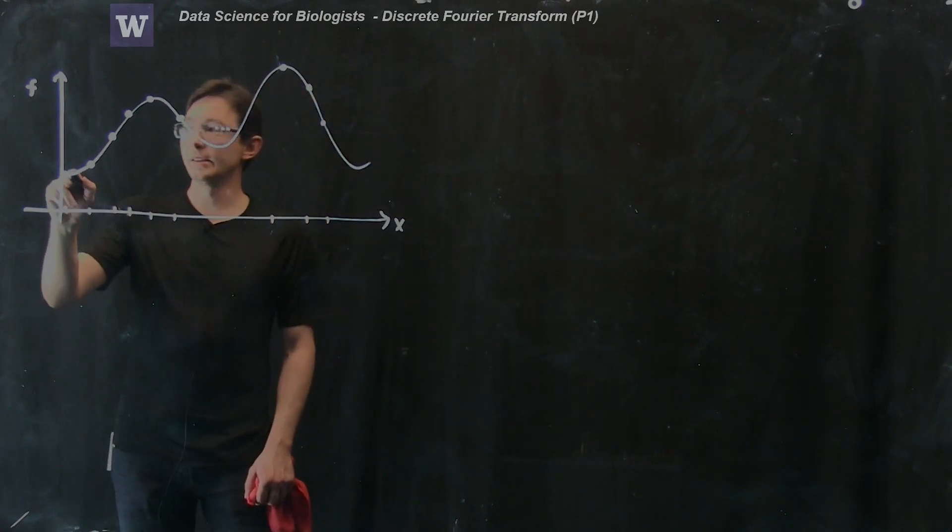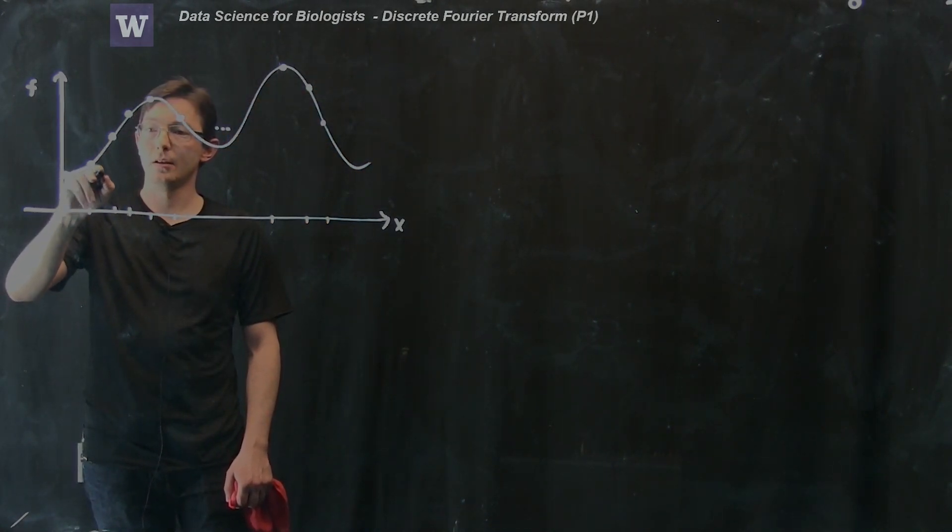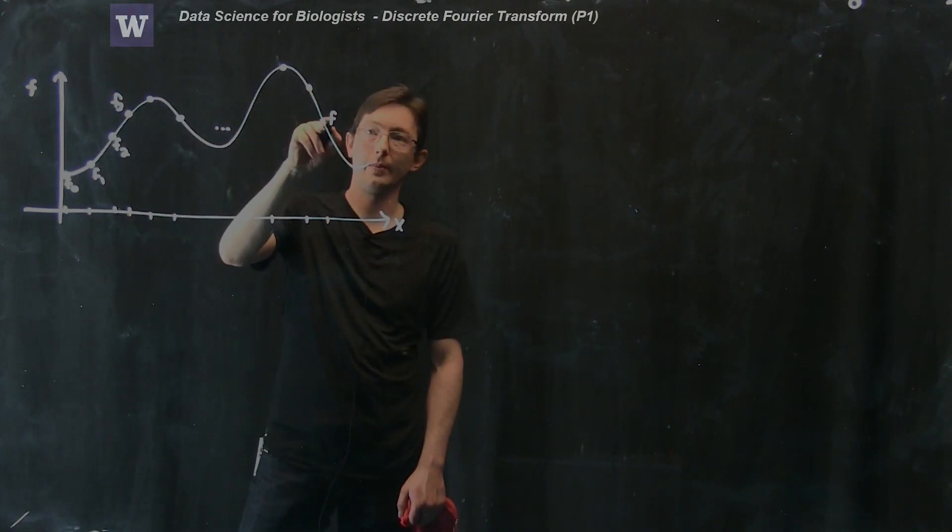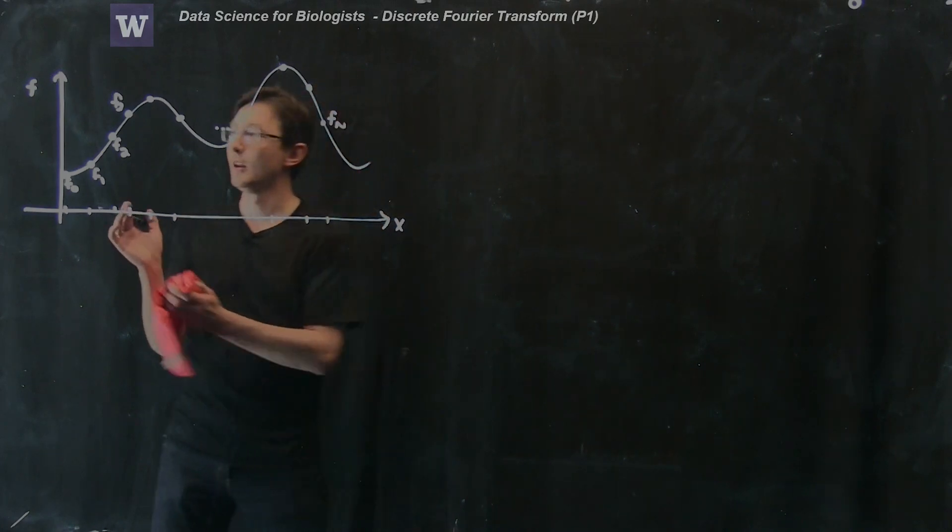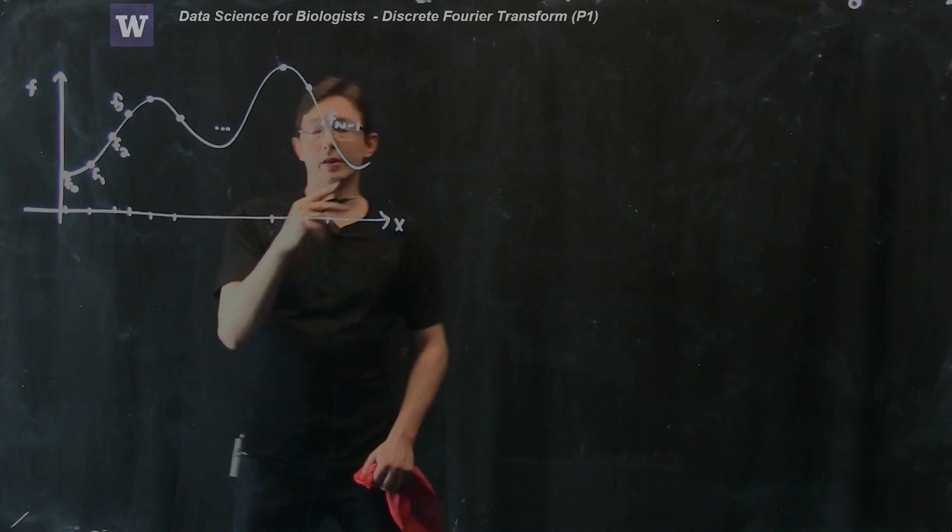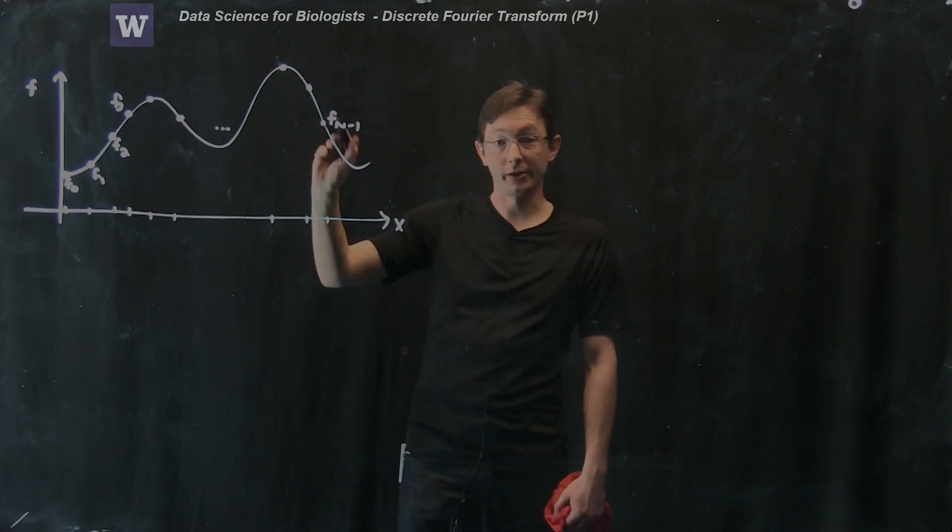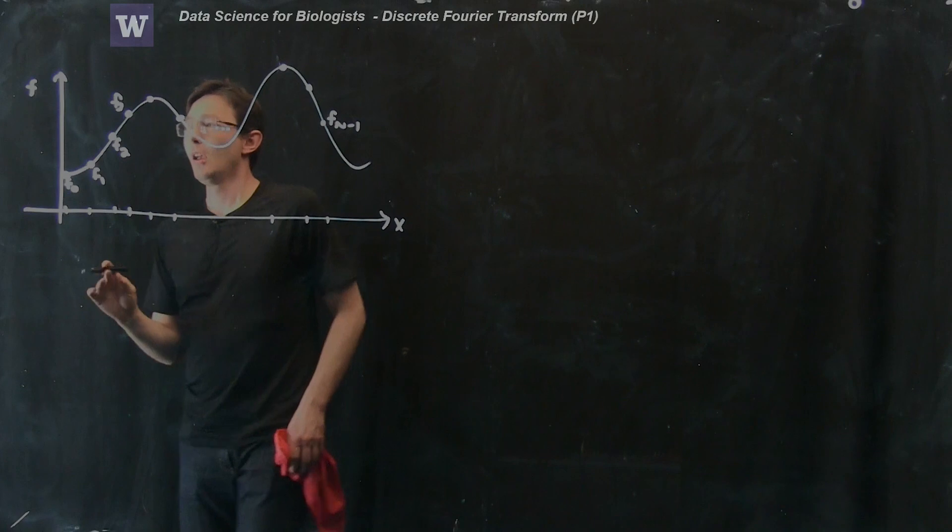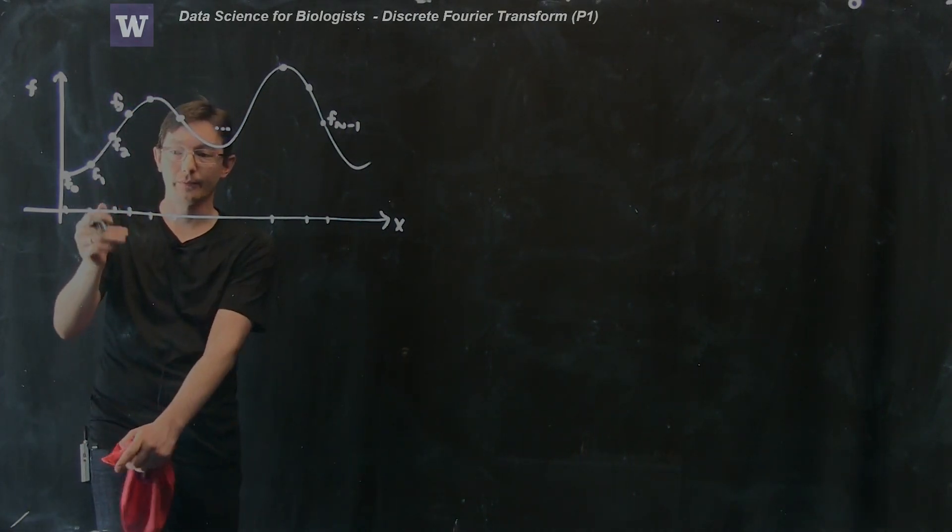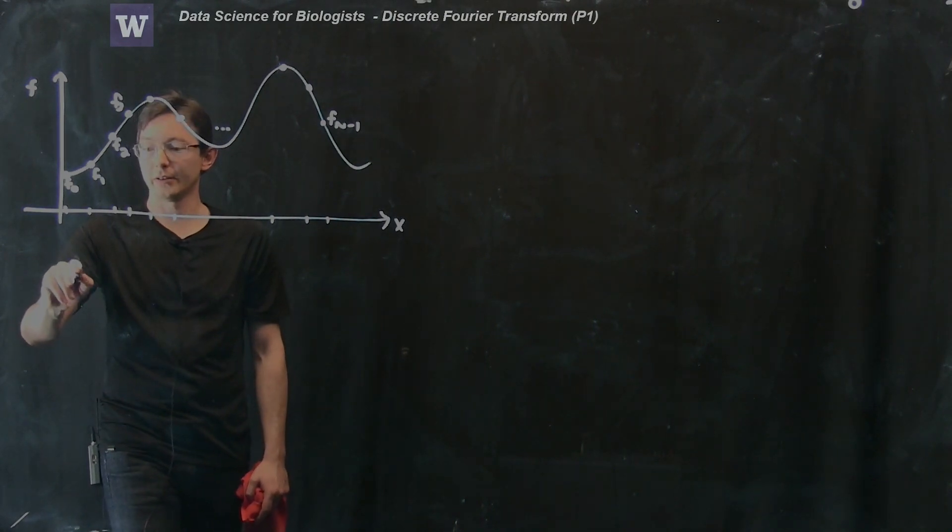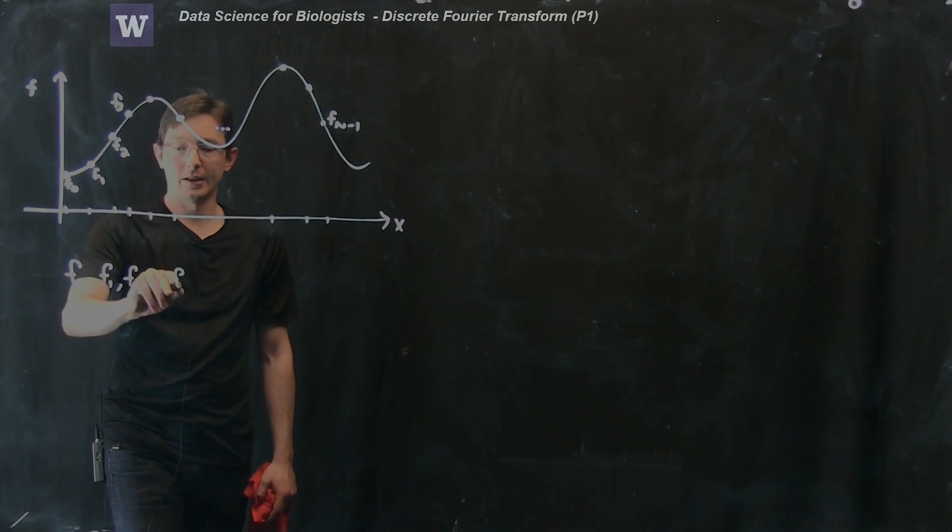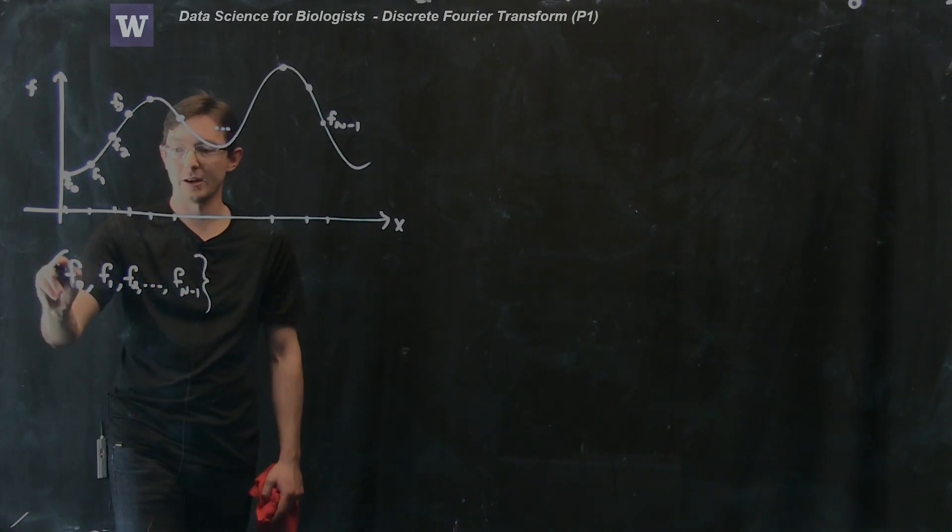And we're going to call these f0, f1, f2, f3, and so on and so forth, all the way up to fn minus 1. So we started with 0, we're going up to n minus 1. So we have n total measurement points in this function. And what we would really like to do is we would like to take this vector of values f. So we're going to take our vector of values f0, f1, f2, dot dot dot, up to f n minus 1. This is a collection of measurements.